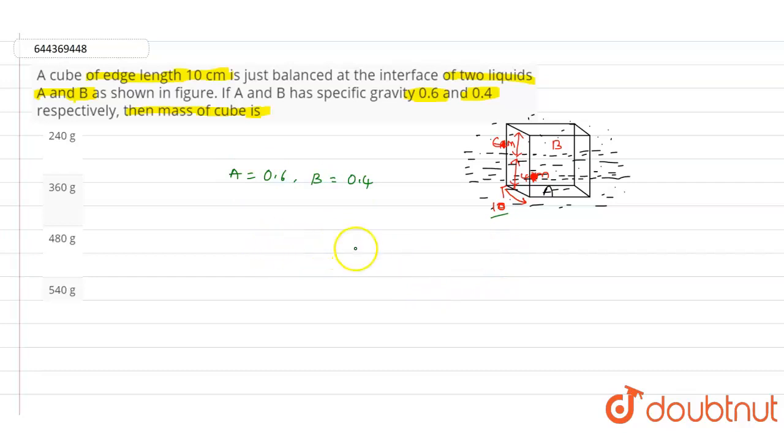According to this given data, in order to find out the mass of the cube, we can write mg equals Fb, where Fb is the buoyant force.